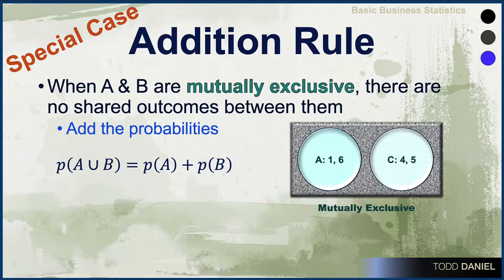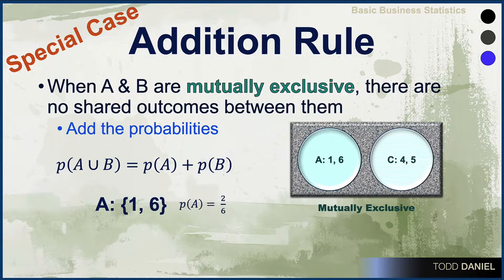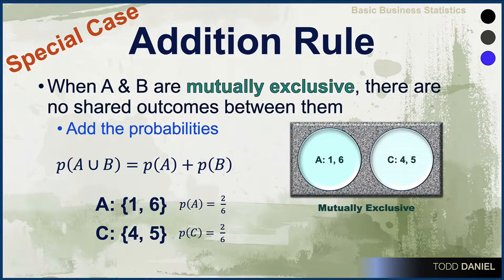The special case occurs when A and B are mutually exclusive — that is, there are no shared outcomes between them. In that case, all you need to do is add up the probabilities. Event A includes outcomes of one and six. Event C is mutually exclusive; it is rolling a four or a five. There are no shared outcomes between these two events, so we simply add the probability of A, two over six, with the probability of C, two over six, giving a total of four over six, or approximately 0.667.